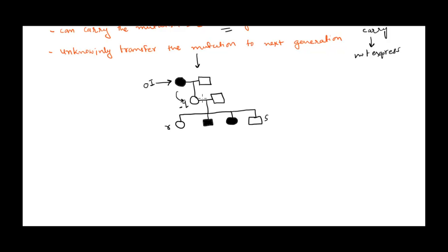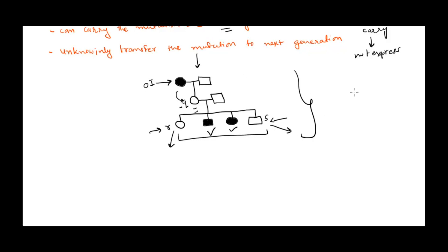Say for example this particular individual is having the disease and gives rise to progeny Q. Q does not have the symptoms — it is not expressing the gene, it is carrying the mutation but does not express it, so it looks normal. When Q gives rise to progeny, say four offspring, two are affected but R and S are not showing the disease. Q was perfectly fine and did not show the phenotype, but 50% of its progeny did show the phenotype — this is an example of penetrance.